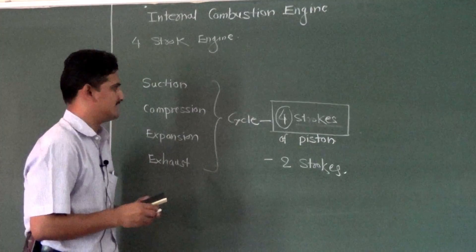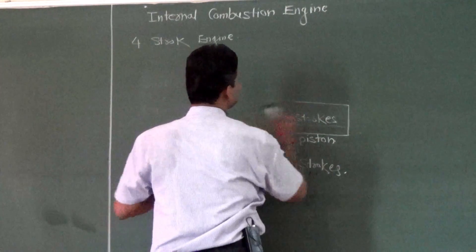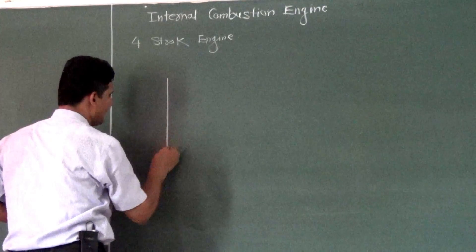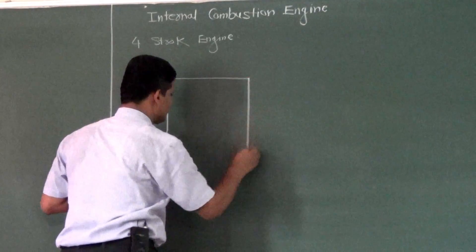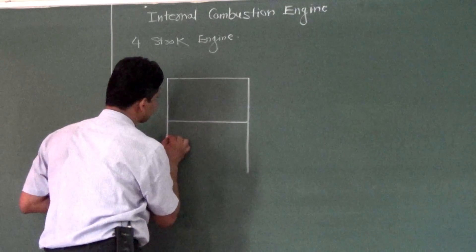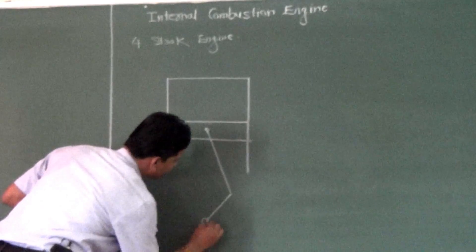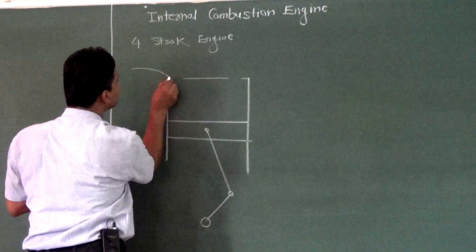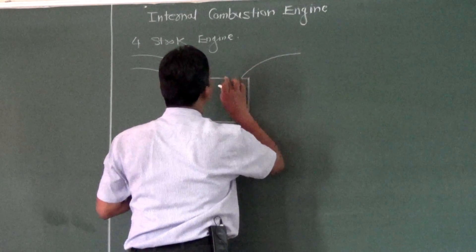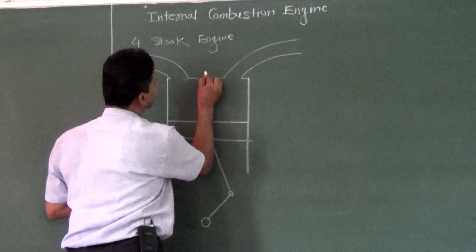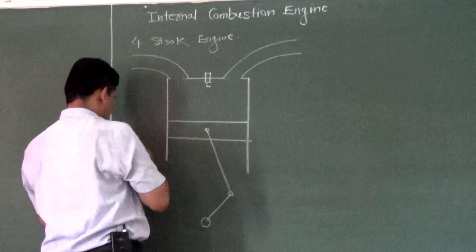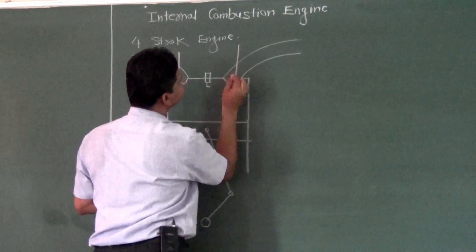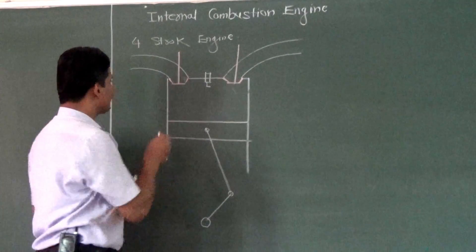The four-stroke engine is the most widely used nowadays. Now let us consider the working of a four-stroke engine. I will draw a simplified line diagram. This is the cylinder, a piston, connecting rod, and a crankshaft. Here let us draw the inlet valve and exhaust valve — this is the inlet manifold, this is the exhaust manifold, and at the center there will be a spark plug or fuel injector according to requirement.